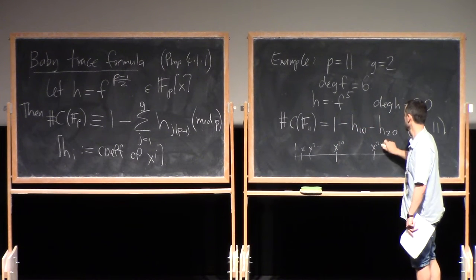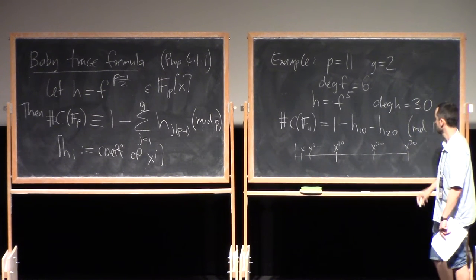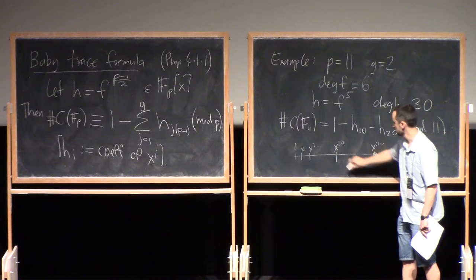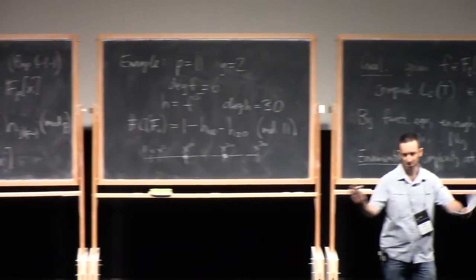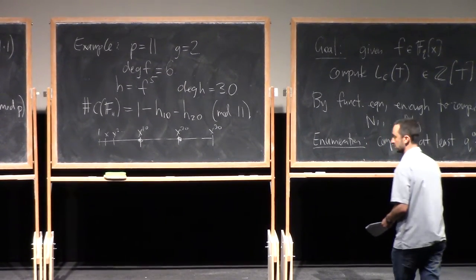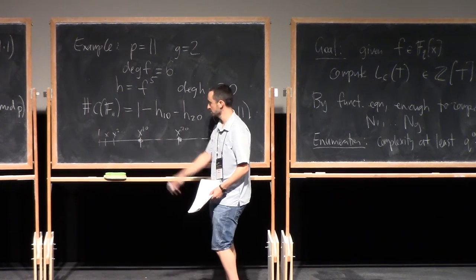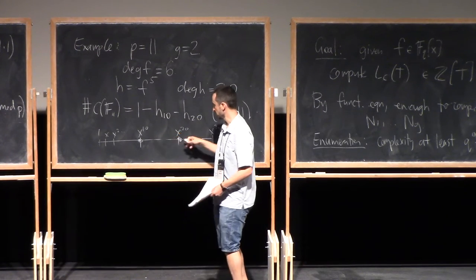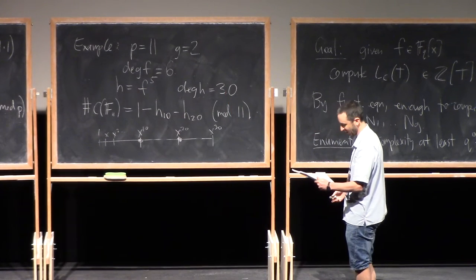And these are the only two coefficients I need. Okay, so the degree is quite large. It's 30, but I can throw away most of the coefficients. I don't care about them. I only care about those two coefficients. There's two of them because it's genus 2, and the spacing between them is coming from P.